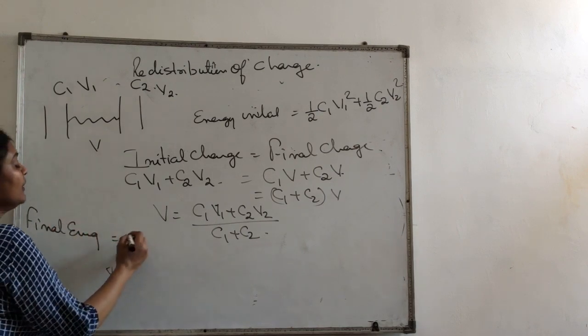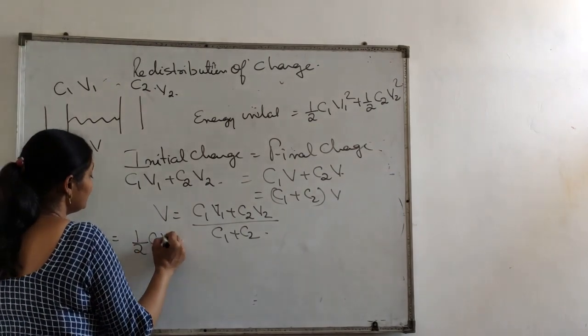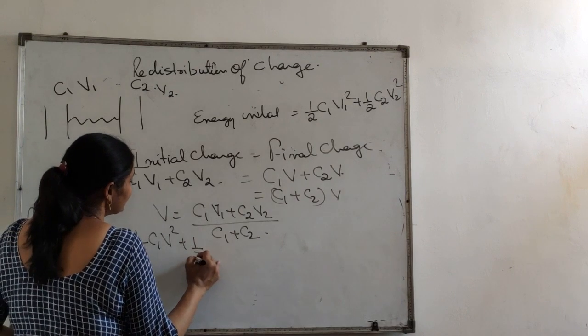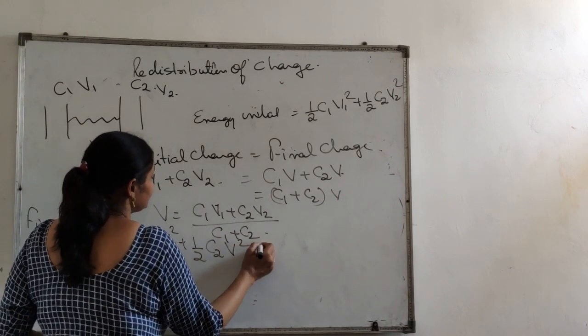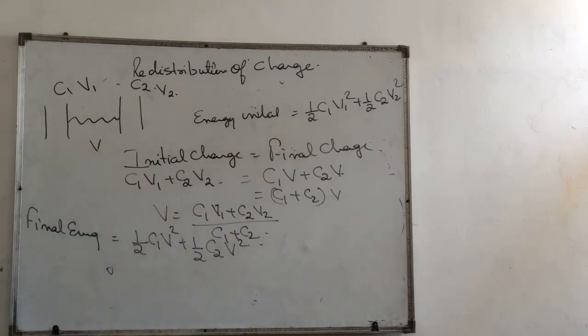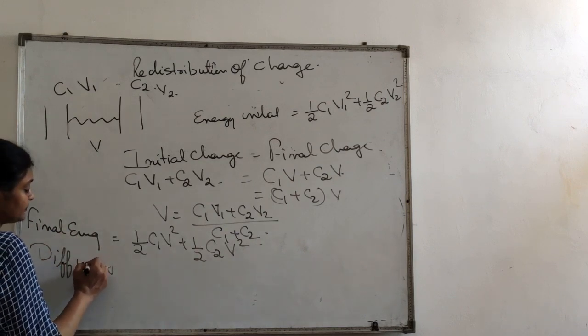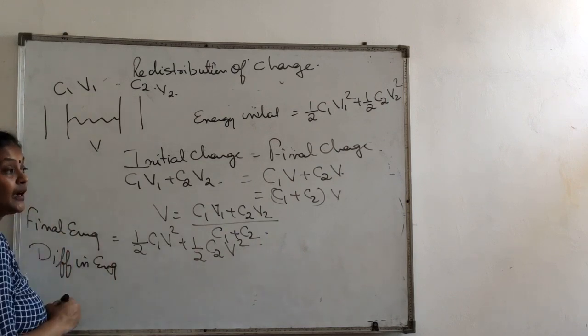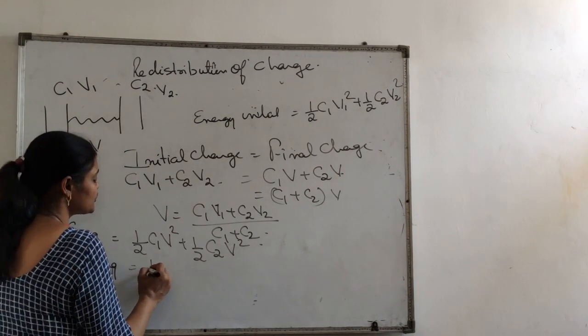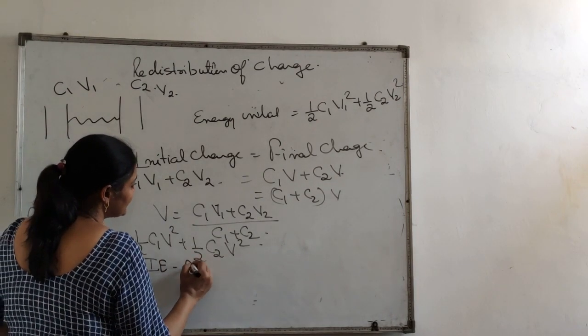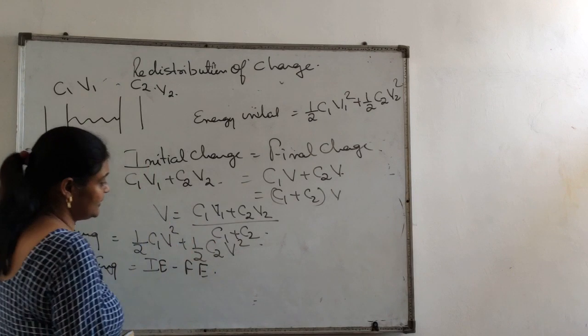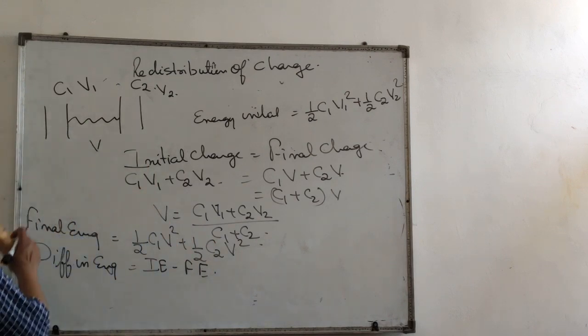What will be the final energy of the capacitors? Final energy will be half C1 V square plus half C2 V square, since both have the same potential. So what will be the difference in energy?